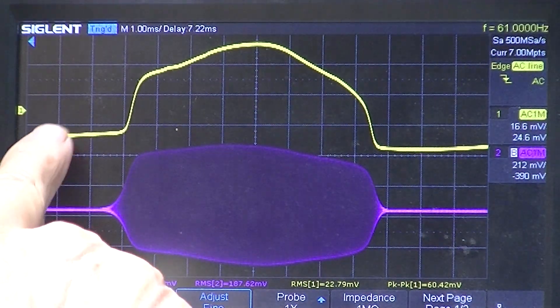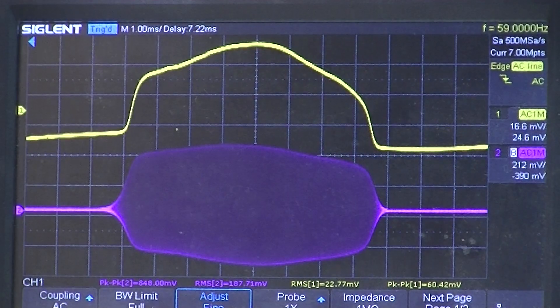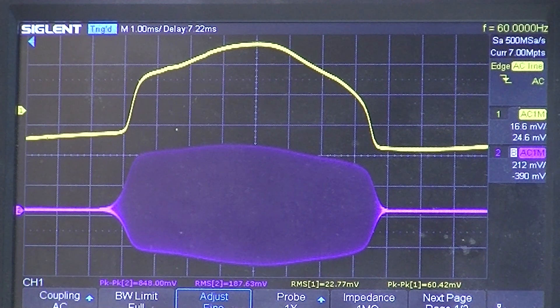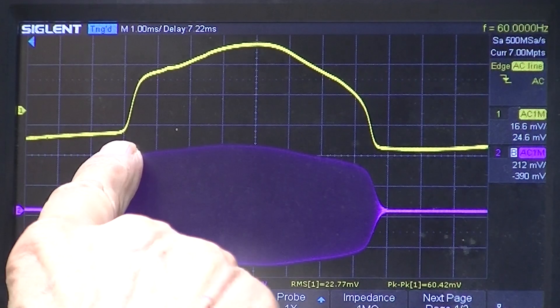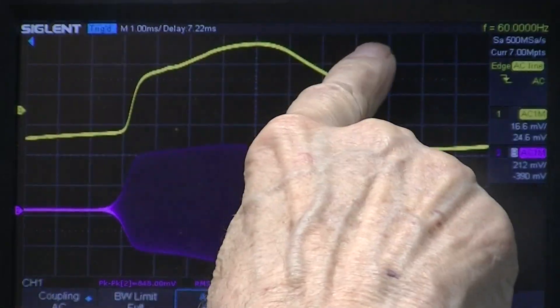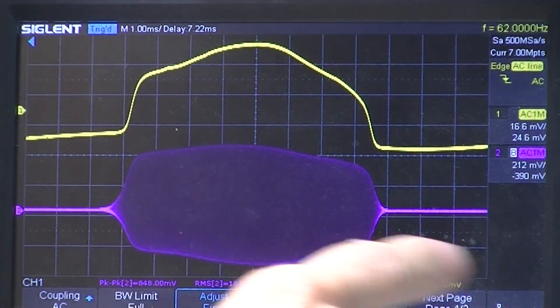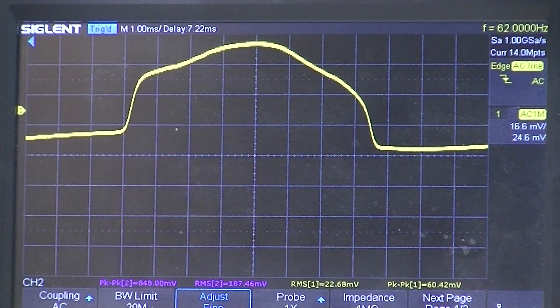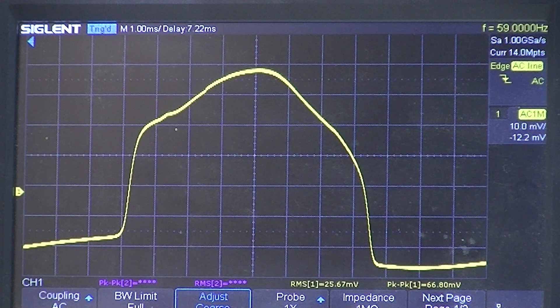This is the demodulated output from the detector. Now if this were a perfect sweep generator, this would be perfectly square and this will be perfectly square. I'm going to get rid of this trace and I'm just displaying the demodulated output.